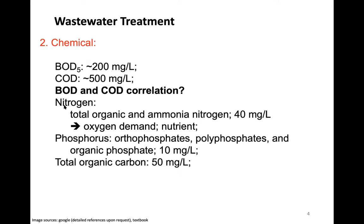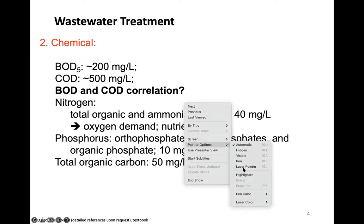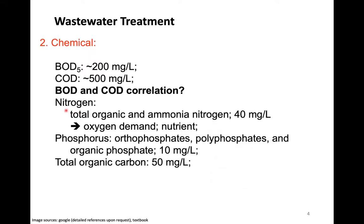People also measure nitrogen and phosphorus because these are nutrients that can cause algae blooms, creating dead zones. Nitrogen exists as organic and ammonium nitrogen at around 40 mg/L. Phosphorus exists as orthophosphates, polyphosphates, and organic phosphates at around 10 mg/L. Phosphates commonly come from dishwashers and detergents, which once discharged serve as nutrients for algae.